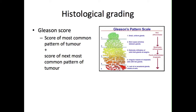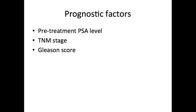The primary grade is essentially the most dominant pattern of the tumour, whilst the secondary grade is the next most common pattern of the tumour. In terms of prognostic factors for prostate cancer, the level of PSA prior to treatment is an important prognostic factor, as is the TNM stage and the Gleason score.